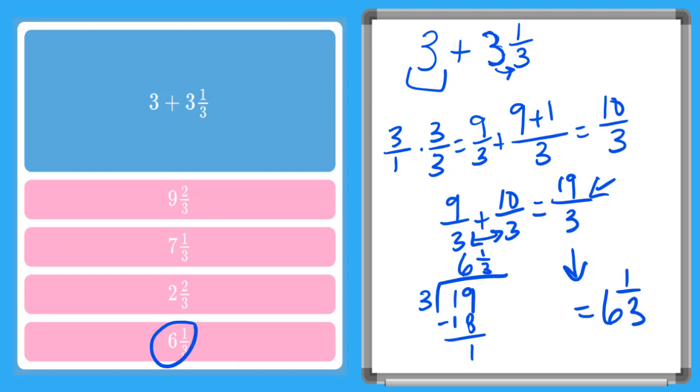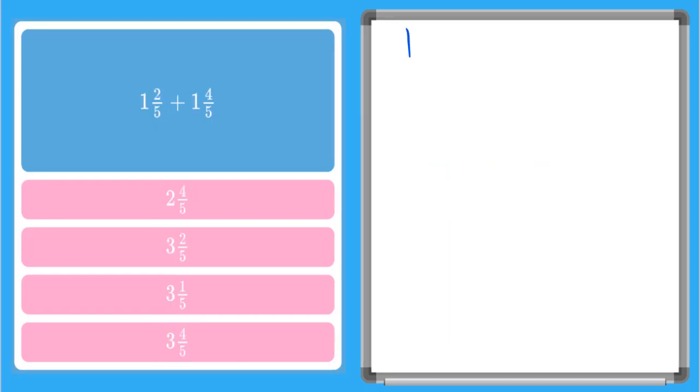Let's try one more together. In this one I have two mixed numbers, 1 and 2 fifths plus 1 and 4 fifths. Let's convert these mixed numbers to improper fractions, starting with our first one. 1 times 5 gives me 5. I add my numerator, which is 2. I keep my denominator the same. So 5 plus 2 gives me 7 fifths.